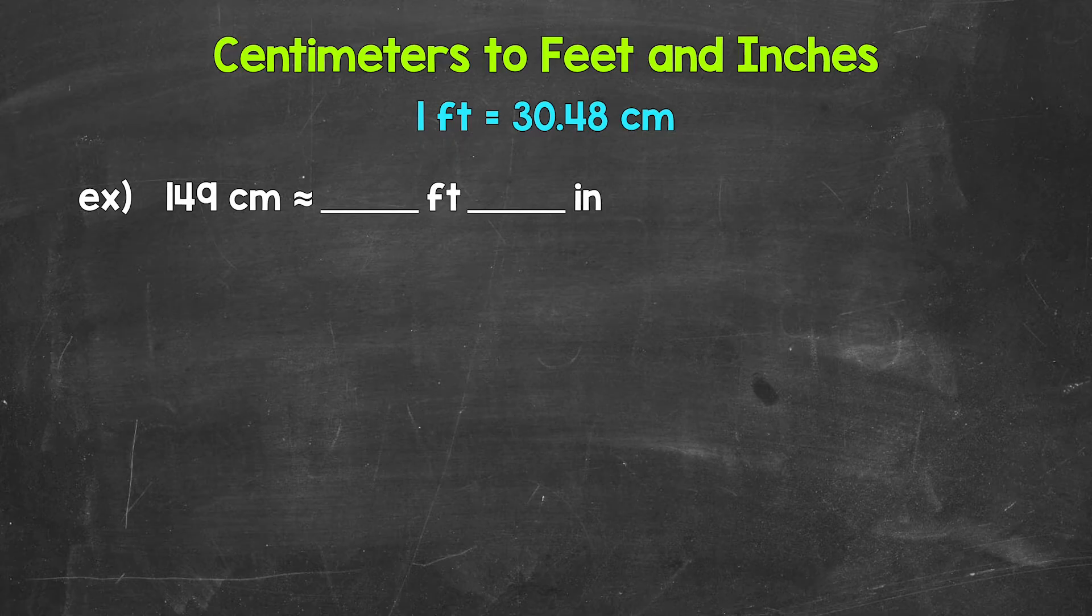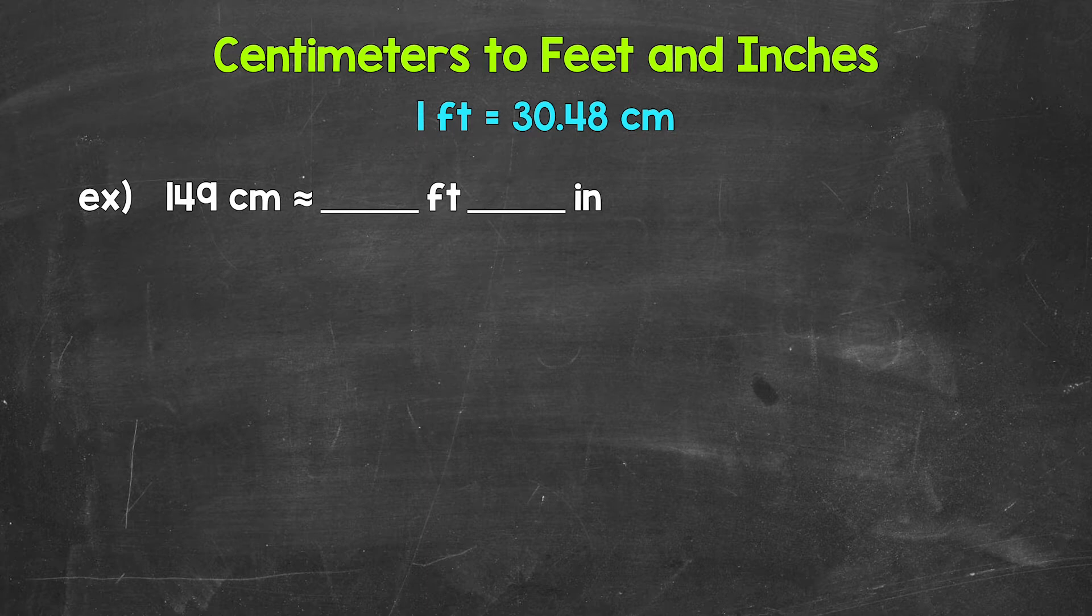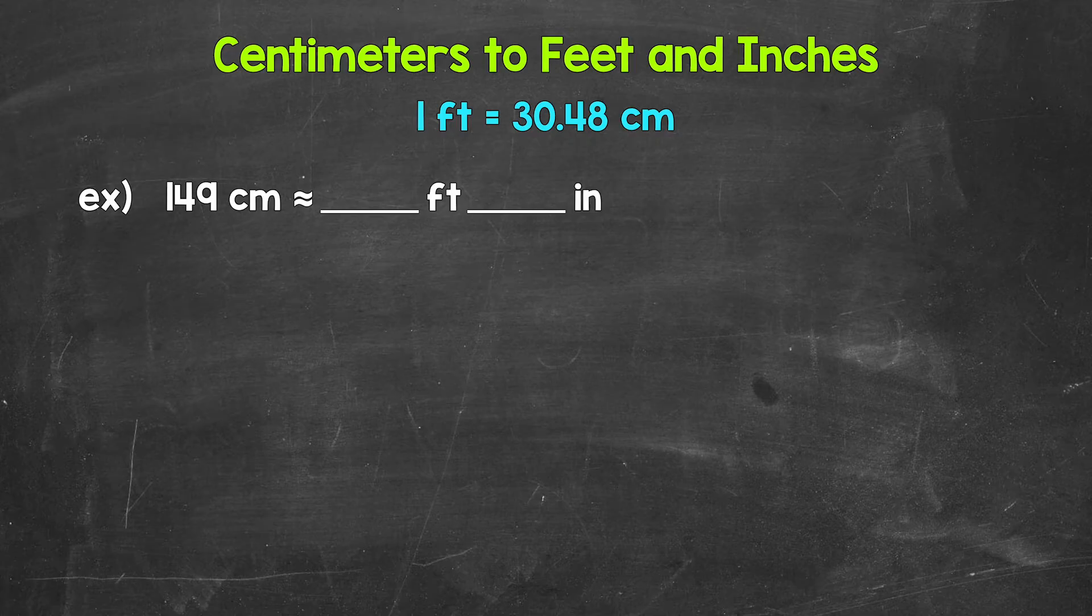Let's jump into our example where we have 149 centimeters is approximately how many feet and inches. We have approximately there because we're going to end up rounding along the way. We'll talk about that shortly. So the first thing that we need to do here is convert centimeters to feet. Then we will worry about inches.